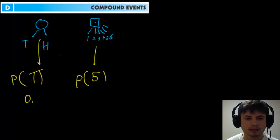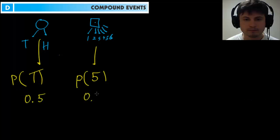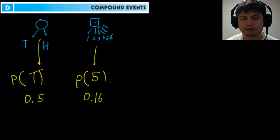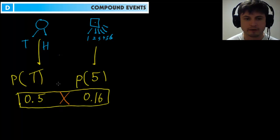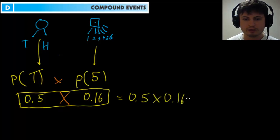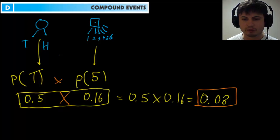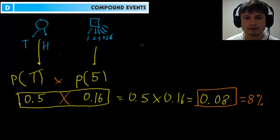The probability of tails is 0.5, and the probability of five is approximately 0.16. Since we're looking for the probability of both events happening at the same time, we multiply them together: 0.5 × 0.16 ≈ 0.08. So there's approximately an 8% chance of both occurring. This is the essence of compound events.